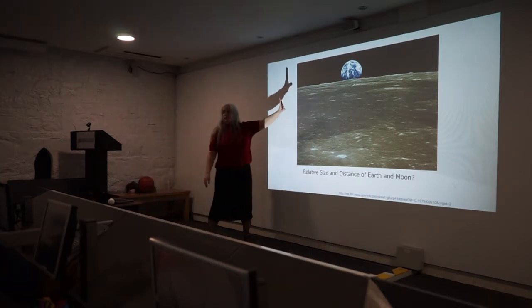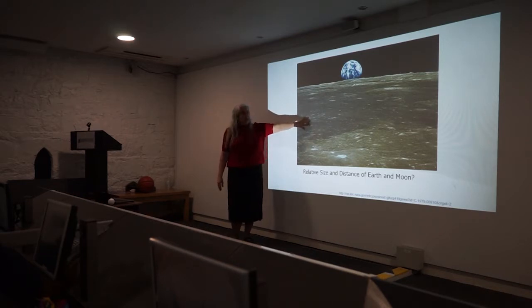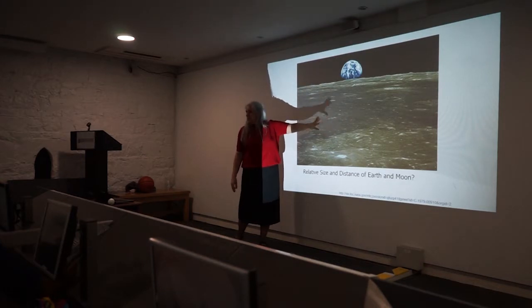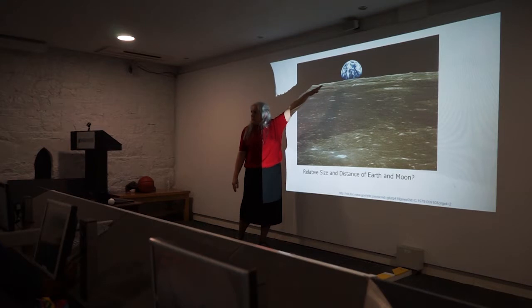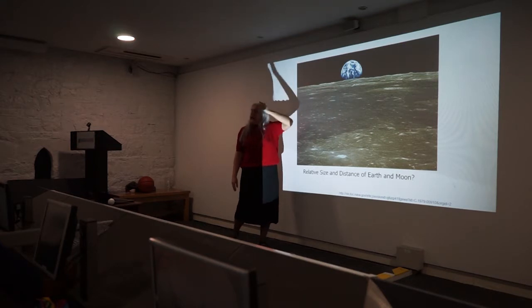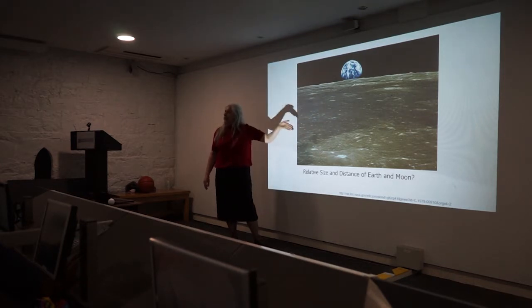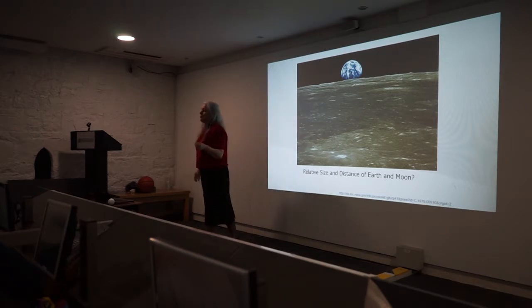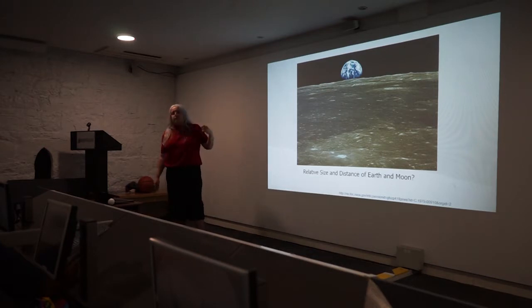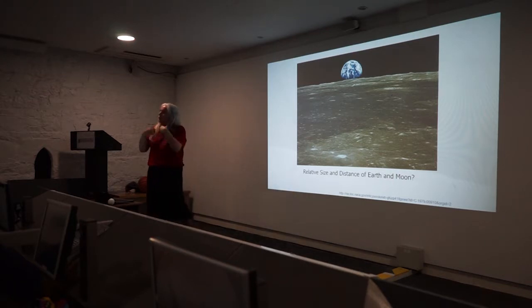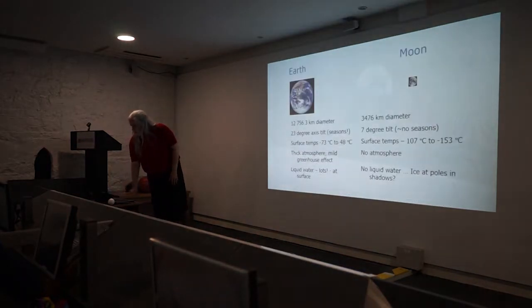The reason we get so interested in the moon is because we believe the early moon, when it formed, came from the Earth. The processes that have changed the Earth haven't been happening on the moon. So if we want to know about the early Earth, we look at the moon. The composition of the rocks tells us about the early Earth, while the scarring, impacts, and craters are preserved on the moon. The moon tells us about ourselves.